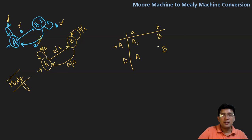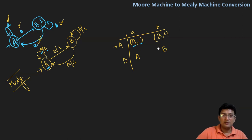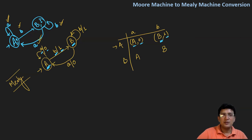The output associated with the transition — when you are at state A taking input 'a' — is zero, so this is written as A,0: 'a' is the input and zero is the output. Similarly, when transiting with input symbol 'b', the output associated is one, so I write one here. When at state A with 'b', you move to state B, and the output value associated with that transition is one, so I write B,1.